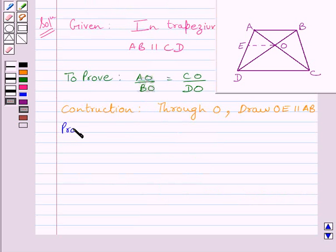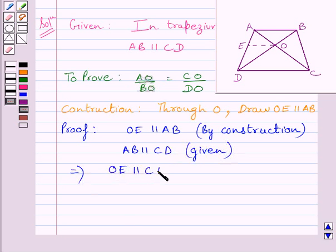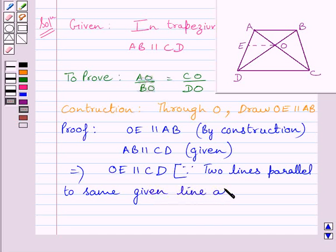Let us start the proof now. Now, we know OE is parallel to AB by construction. And also, AB is parallel to CD. This is given in the question. So, this implies OE is parallel to CD. OE is parallel to AB as well as CD is parallel to AB. Now, two lines parallel to same given line are parallel to each other.